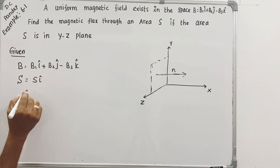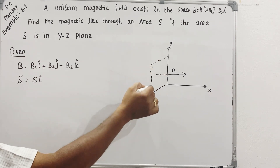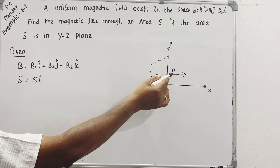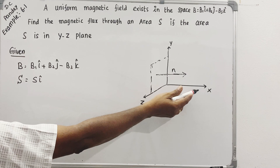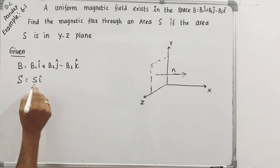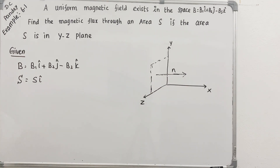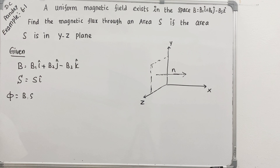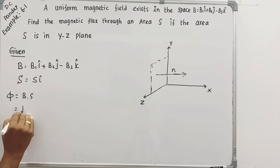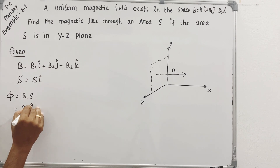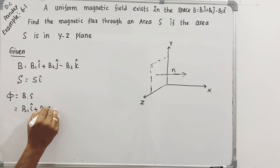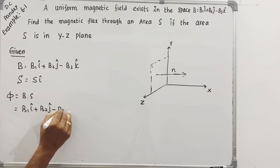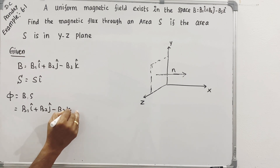The S-vector is S·i-cap for the yz plane, since the normal direction is along x. Here is the formula: phi = B dot S. That is B·S·cosθ. So expanding: B1·i-cap + B2·j-cap − B3·k-cap, dotted with S·i-cap.